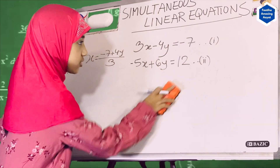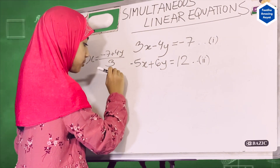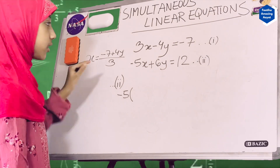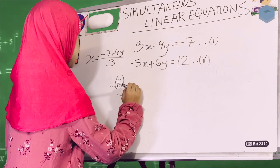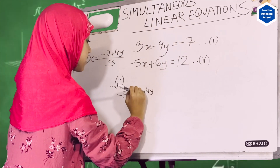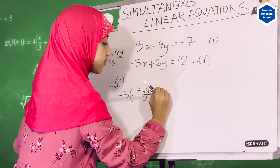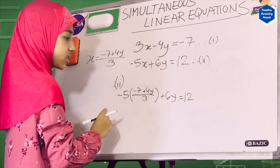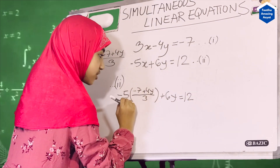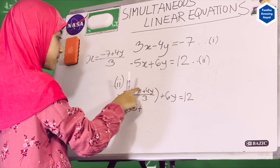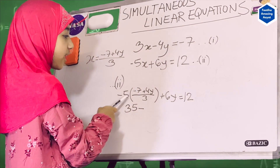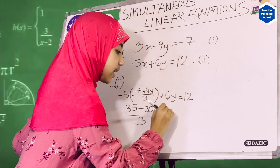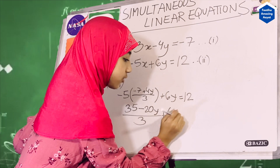We'll erase this so we have more space to work for equation 2. Working with equation 2 now, we insert our x equation. So minus 5 times (minus 7 plus 4y divided by 3), plus 6y, equals 12. Now, minus times minus is plus, so 5 times 7 is 35; minus times plus is minus, and 5 times 4y is 20y. So we have (35 minus 20y) over 3, plus 6y over 1, equals 12.